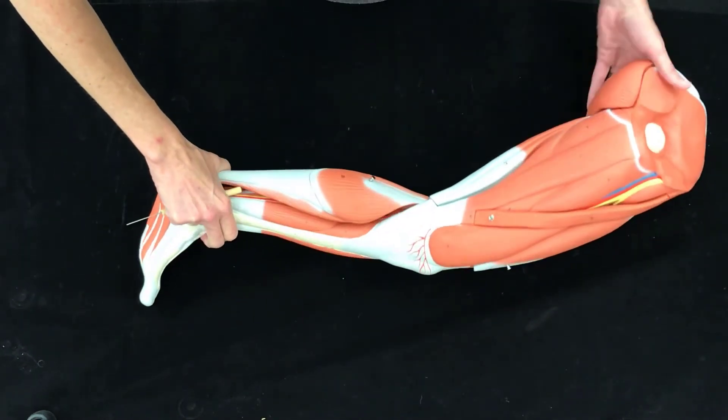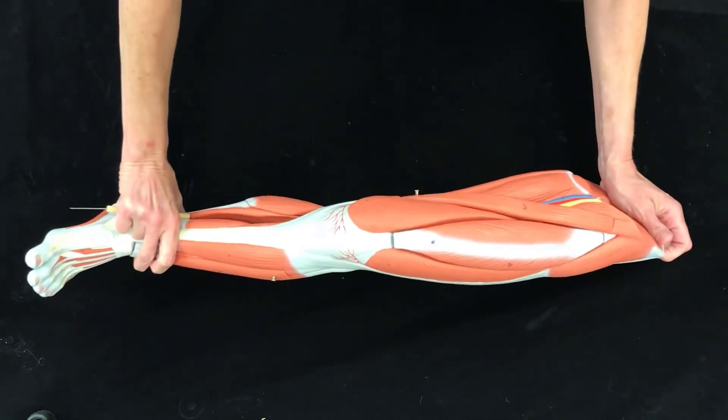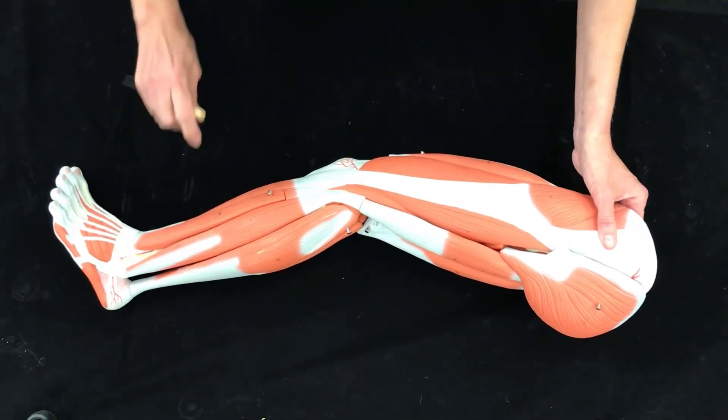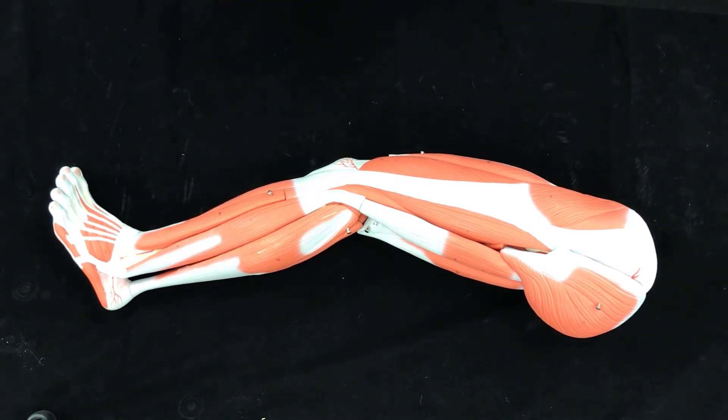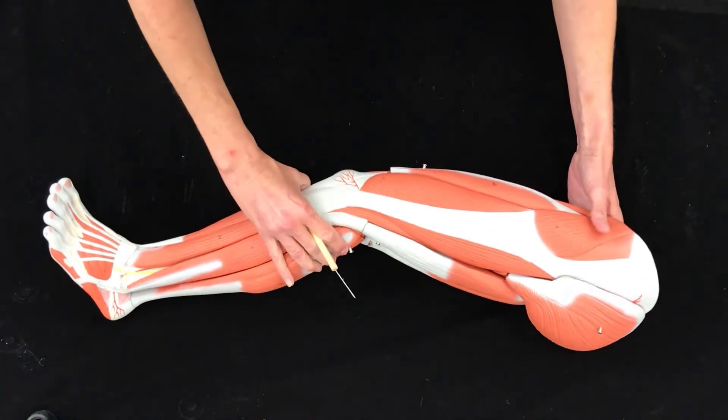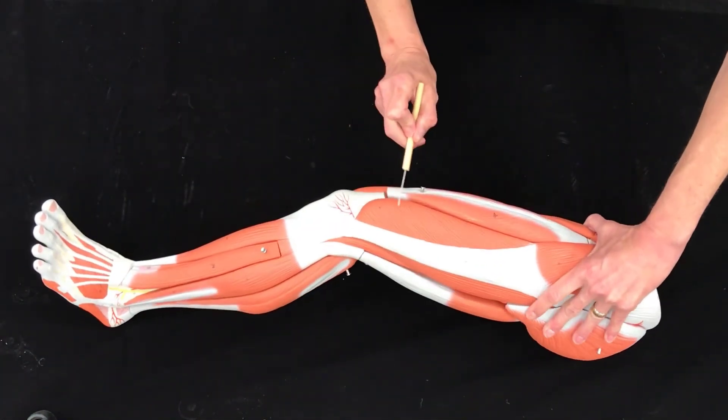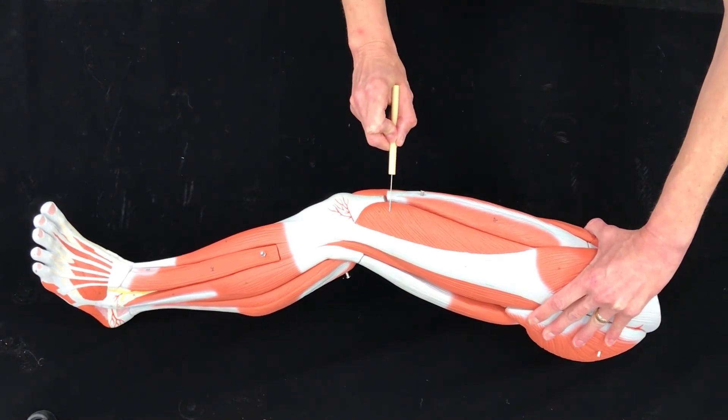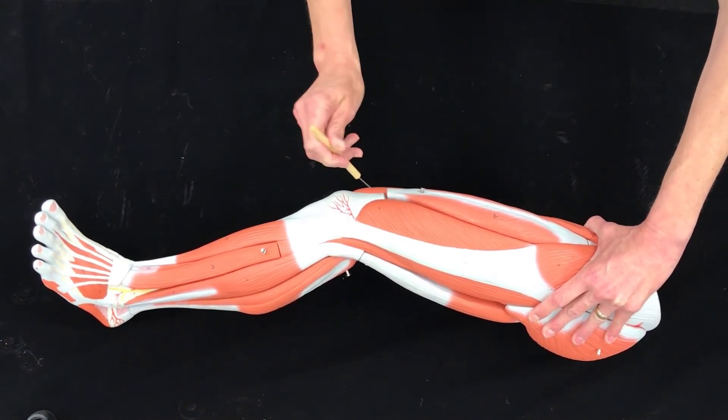Okay, so intramuscular injections. We call these IM injections. So when giving an IM injection, we have three commonly used places. This is the first one we talk about and it is the vastus lateralis. So it is one of those quadricep muscles. Now this is the one that's commonly used with children.